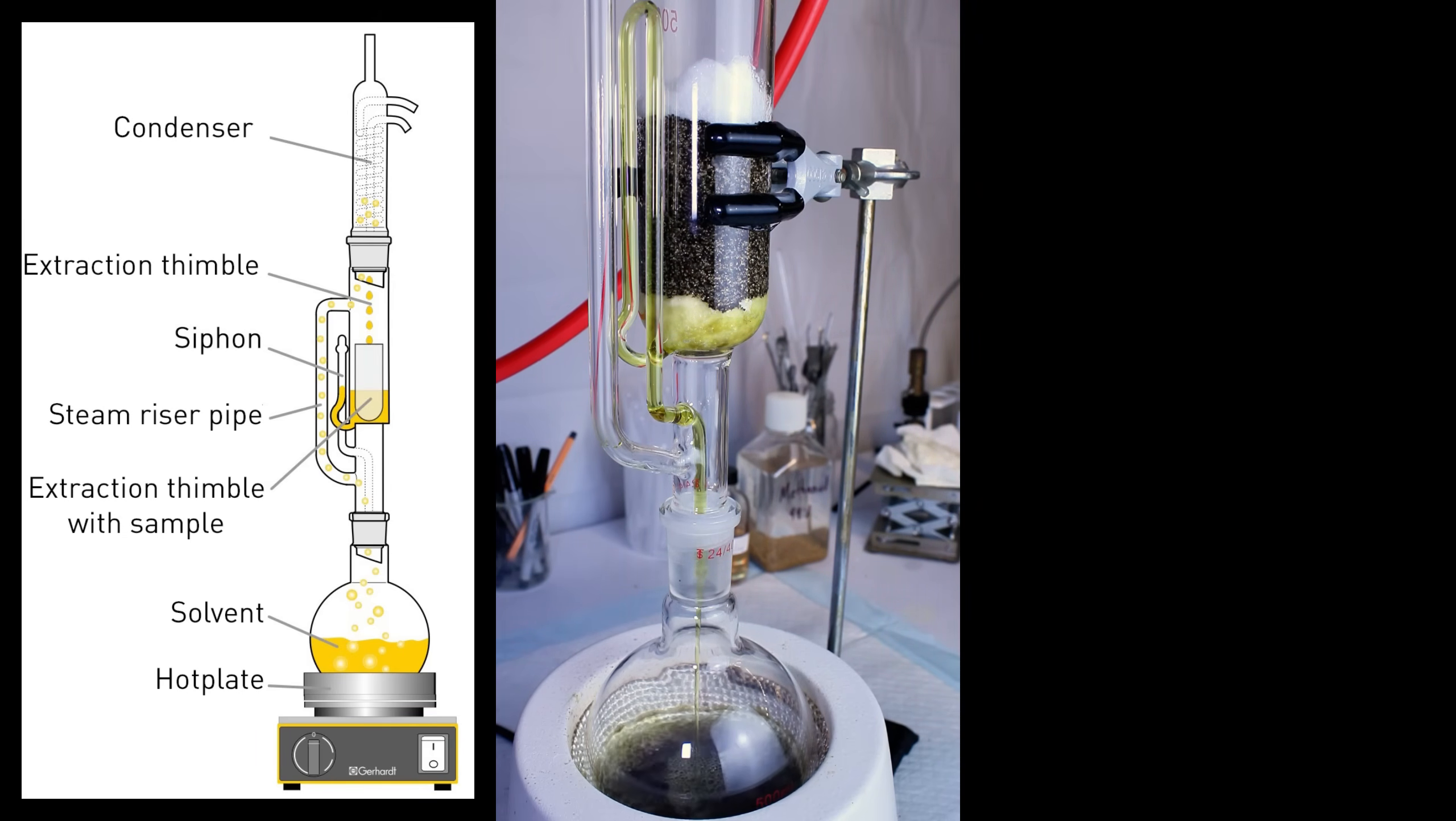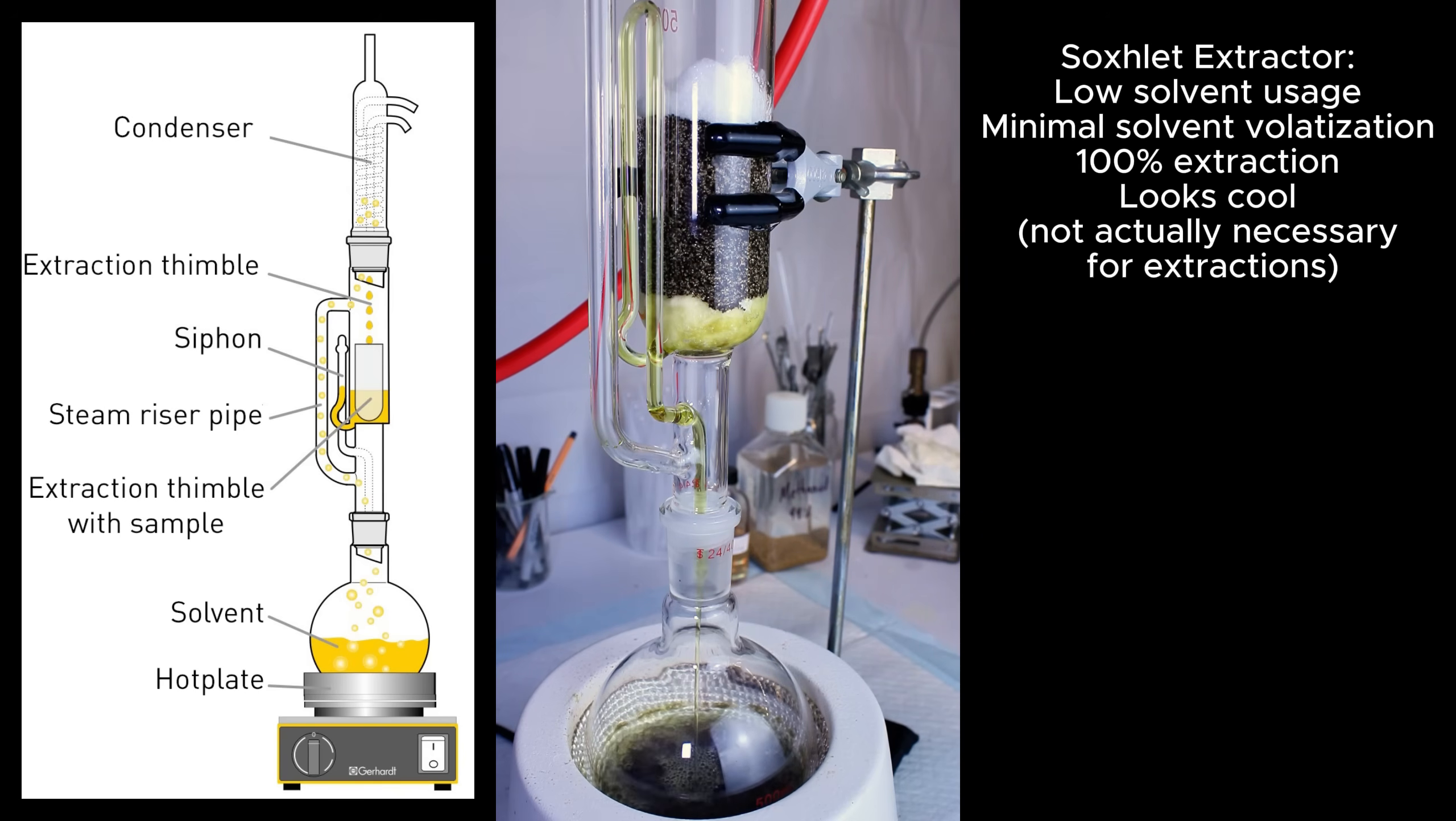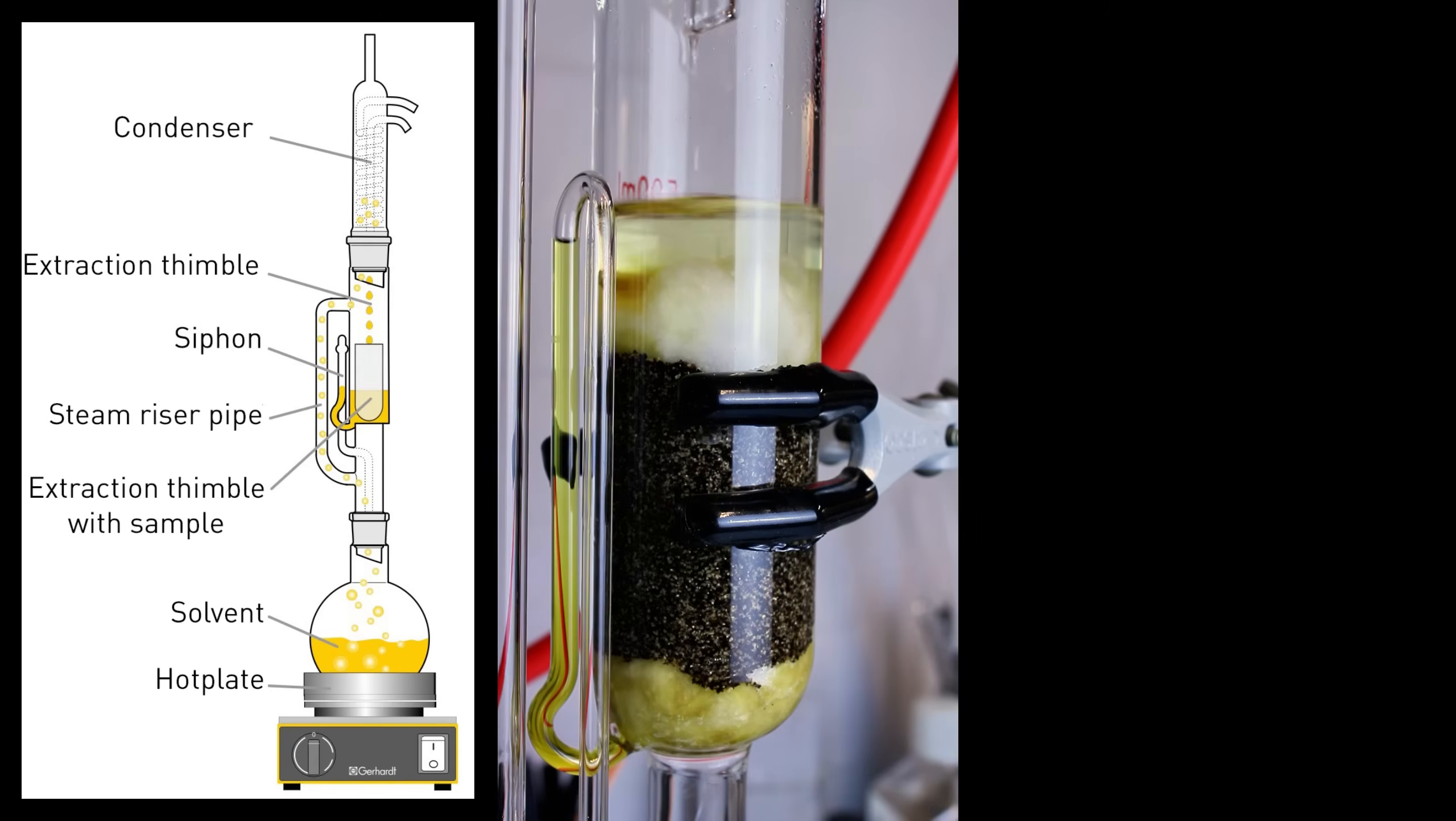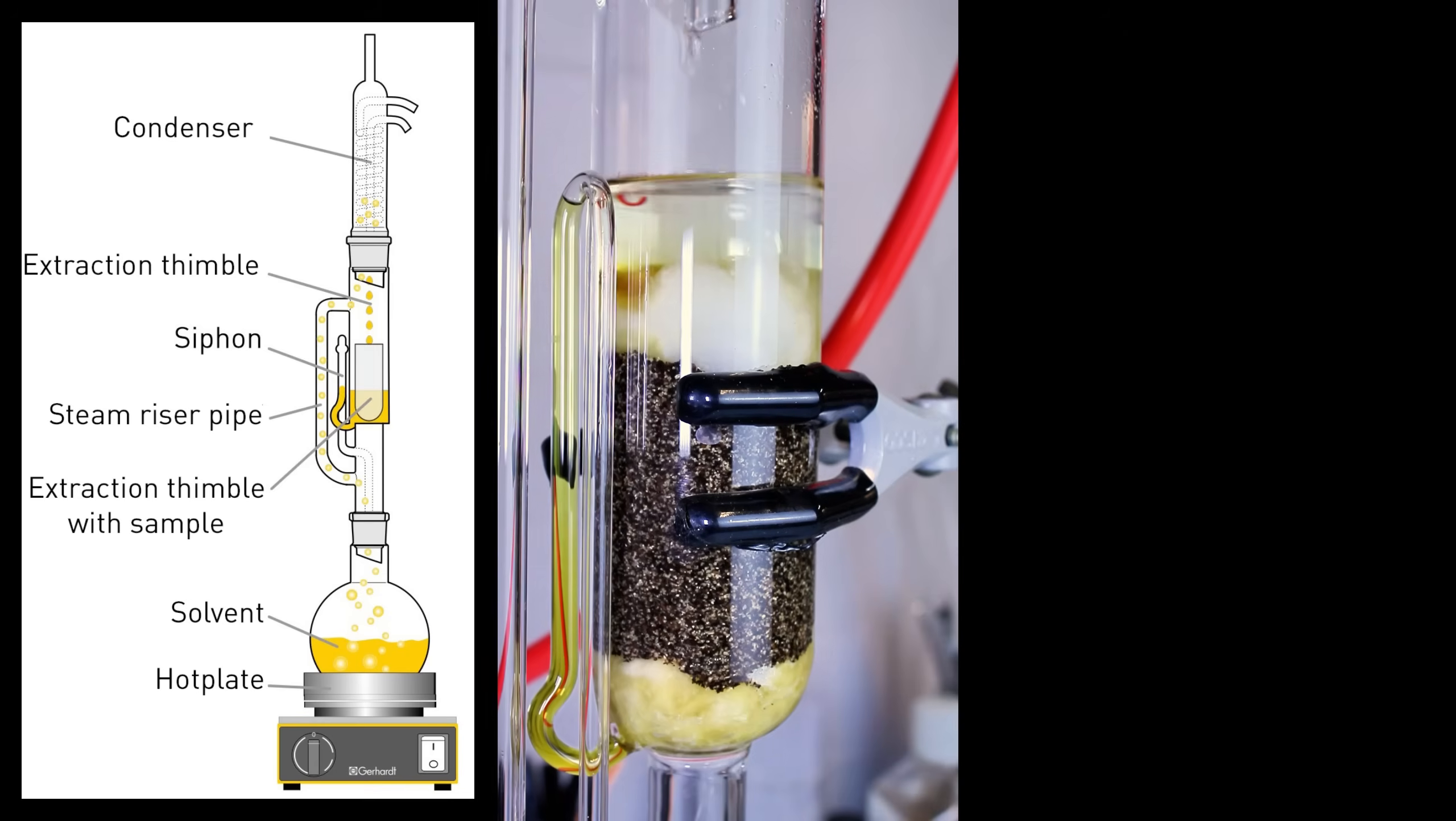This process is also entirely feasible without an expensive Soxhlet Extractor, and all you'd need to do is boil the black pepper in isopropyl for a while and then filter the black pepper out. The only real downside to a method like this is that it's going to be a lot more wasteful of solvent, which is only really a problem if you're using an expensive solvent or if you're doing extractions all the time. Otherwise, it's totally fine.